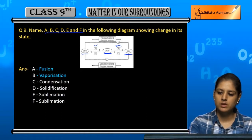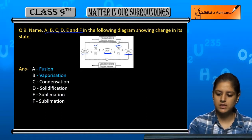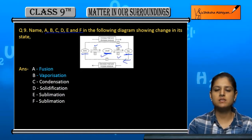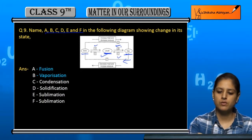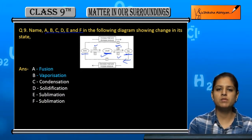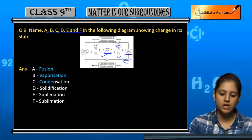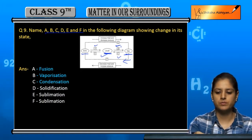Now, the third is C. If we look at C, then we convert gas to liquid. So the name of the process is condensation.